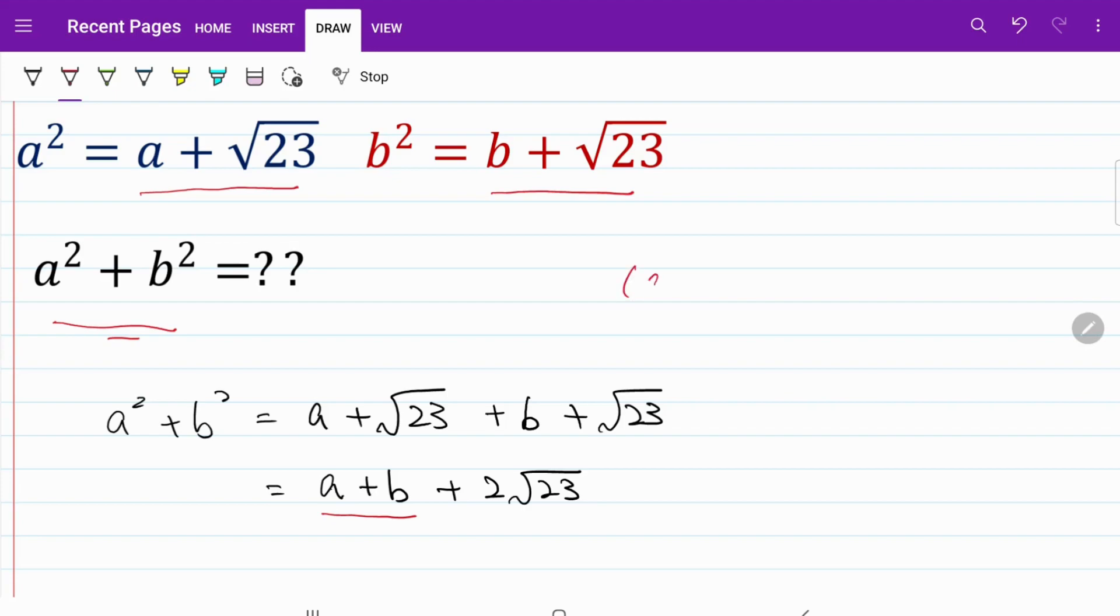One way to go about it is to use (a + b)² = a² + b² + 2ab.